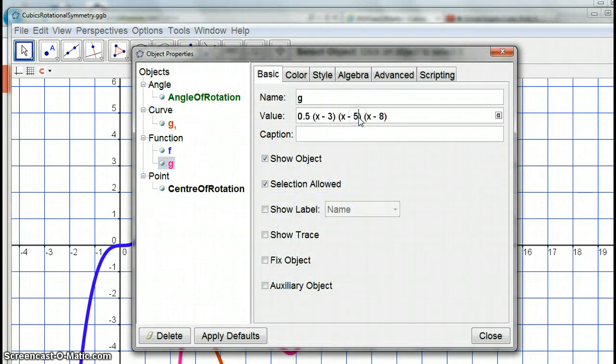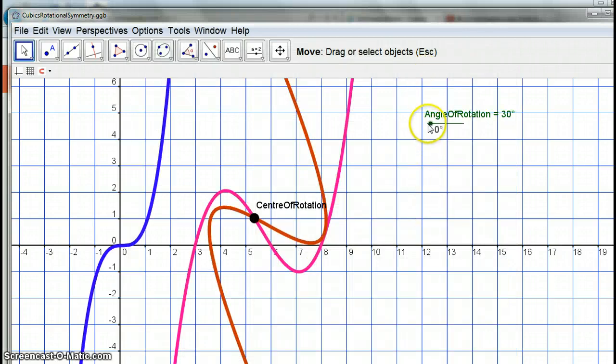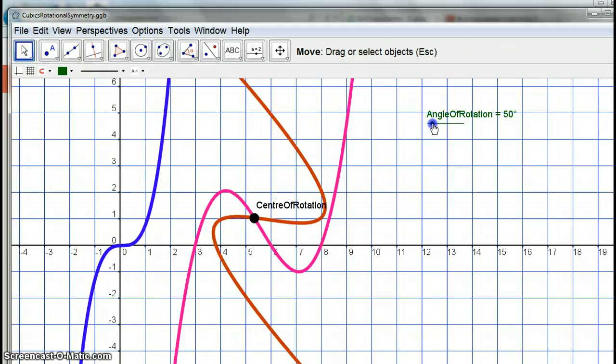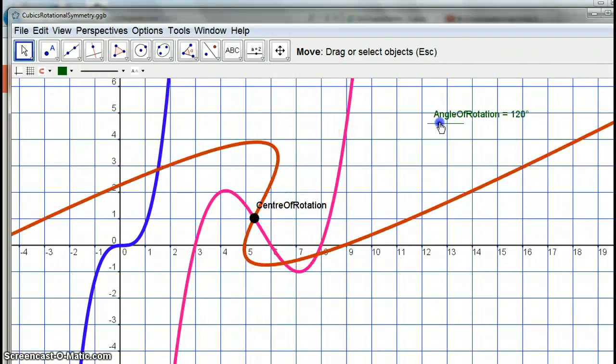and, for example, change the 5 to a 6, and maybe change the k value to 0.5, I've got a different graph. It's still a cubic, and it would still have that rotational symmetry.